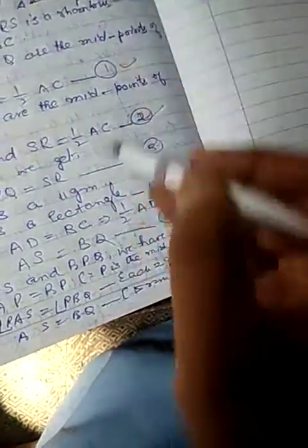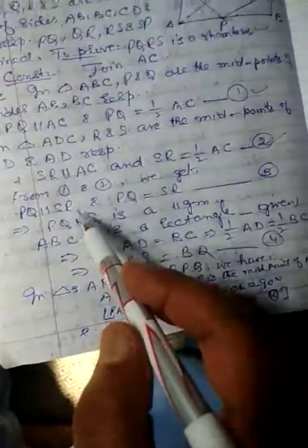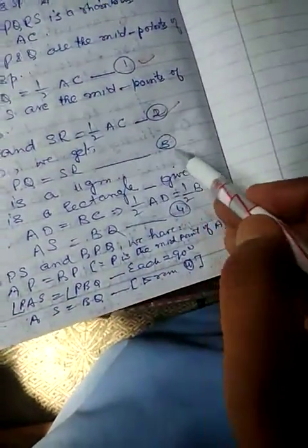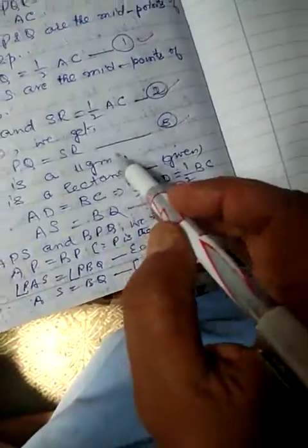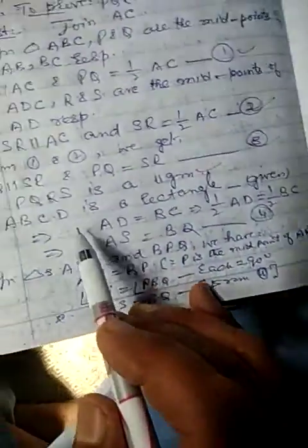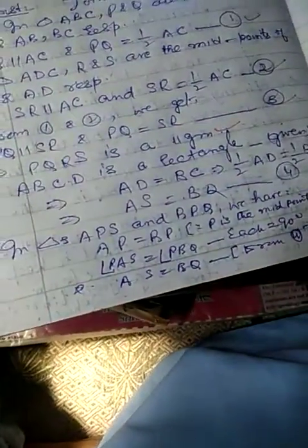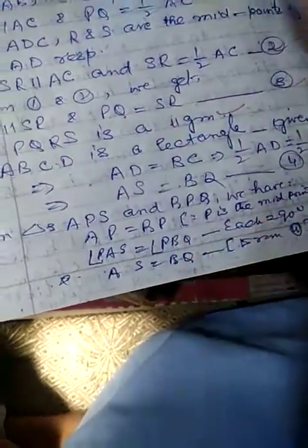We have to second. From first and second we get PQ is parallel to SR and PQ is equal to SR. This is third, which implies PQRS is a parallelogram. Now we are given that ABCD is a rectangle, given in the question.